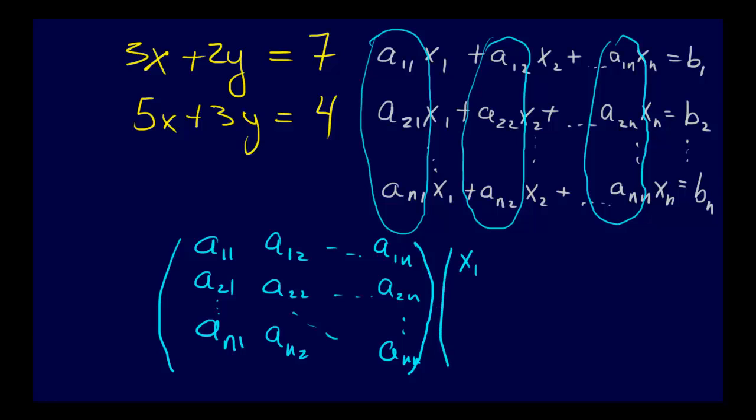And then we say x1, x2, all the way to xn, and that is equal to b1, b2, to bn. All right, and so if you follow the rules of matrix multiplication, which we've outlined, you will come up with this exact same system of equations.